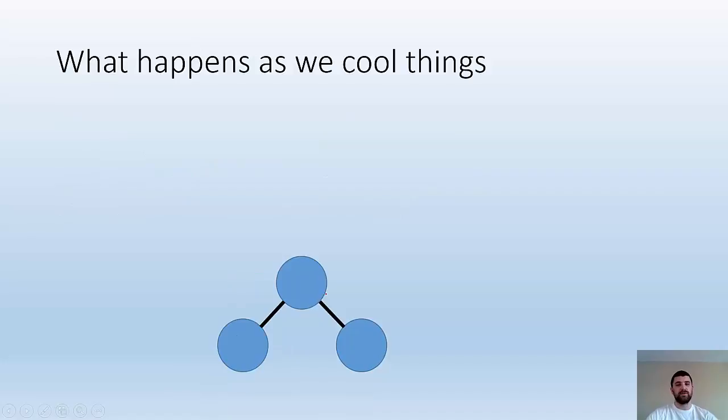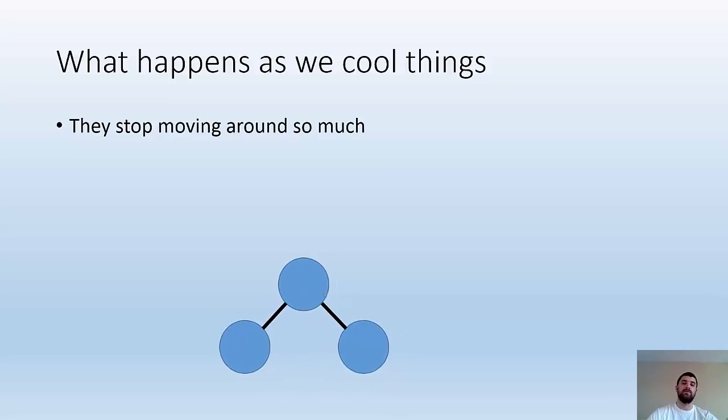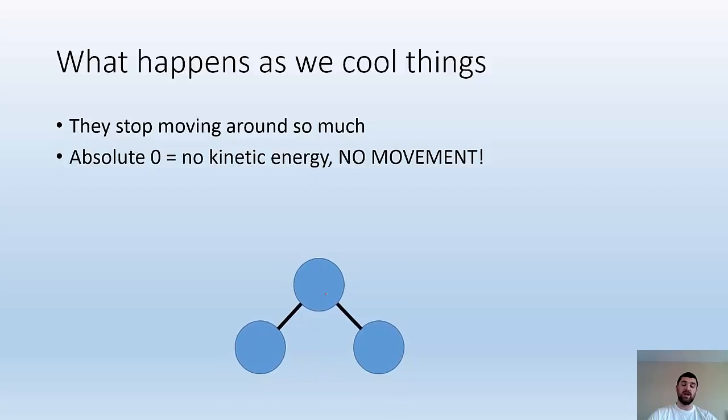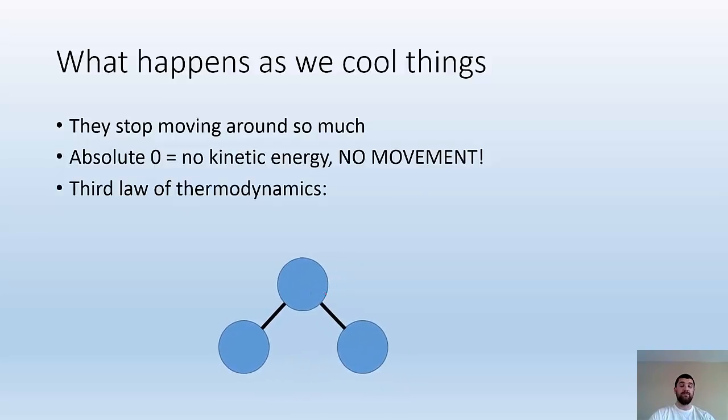So what happens as we cool things down? How is temperature affecting entropy? Well, they stop moving around so much when we cool things down. So we got this molecule. It's vibrating. It's moving around. At absolute zero there's not going to be any kinetic energy and there's not going to be any movement. So that's the third law of thermodynamics.